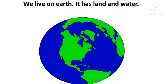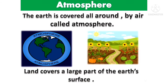We live on earth. It has land and water. The earth is covered all around by air called atmosphere. Land covers a large part of the earth's surface.